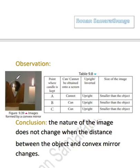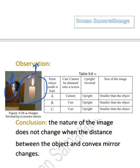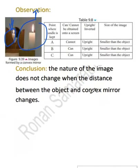Image is smaller than the object. Object is big, image is smaller. So what can you conclude? We can conclude that the nature of the image does not change when the distance between the object and the convex mirror changes.